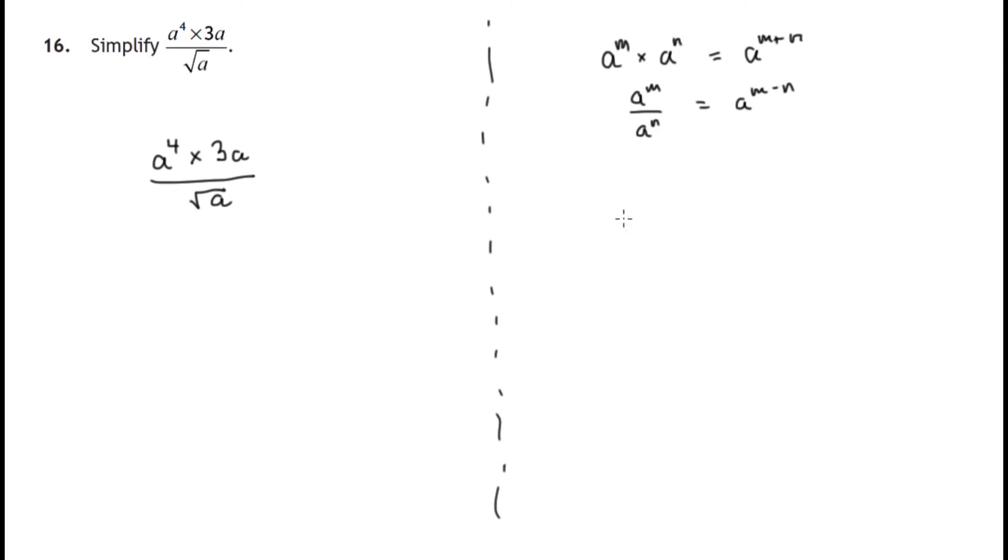The other one we'll need to know is the square root of a. That's a to the power one half. The reason for that is a to the half times a to the half - if we add the indices using this first rule, we get half plus a half is one.